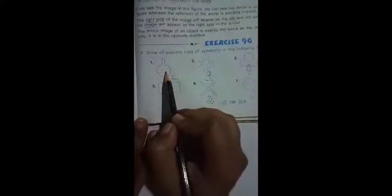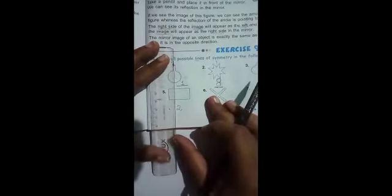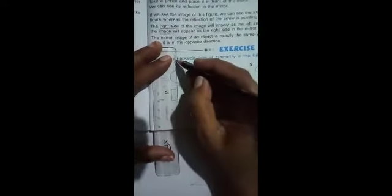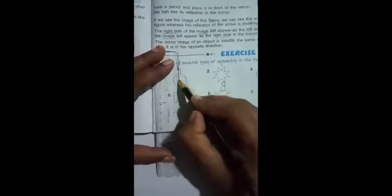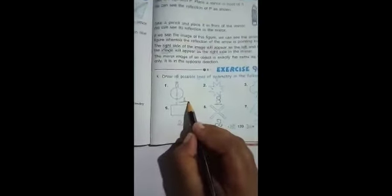Next we will do exercise 9G. Draw all possible lines of symmetry in the following figures. You have to draw the lines of symmetry. First figure. You will draw a line passing vertically downwards which divides the figure into two equal halves. So it has one line of symmetry.